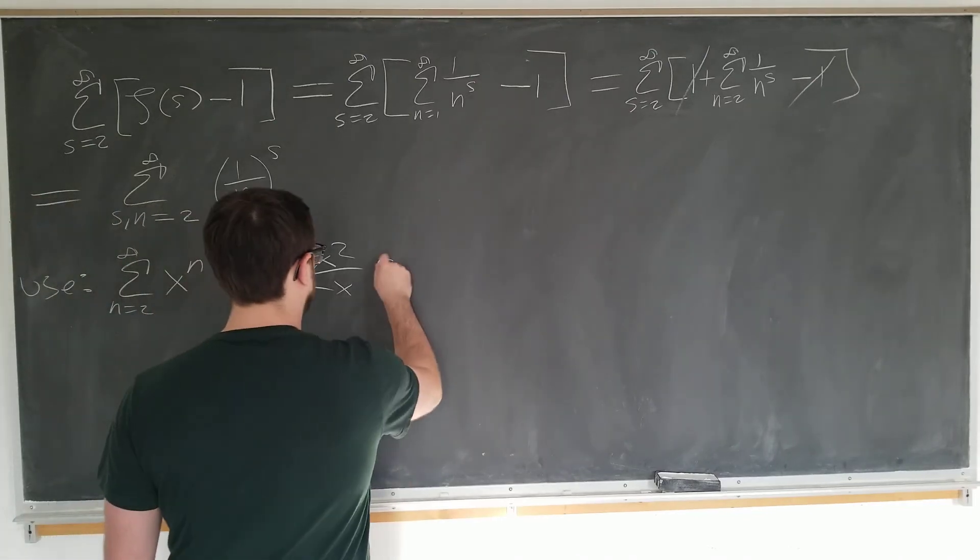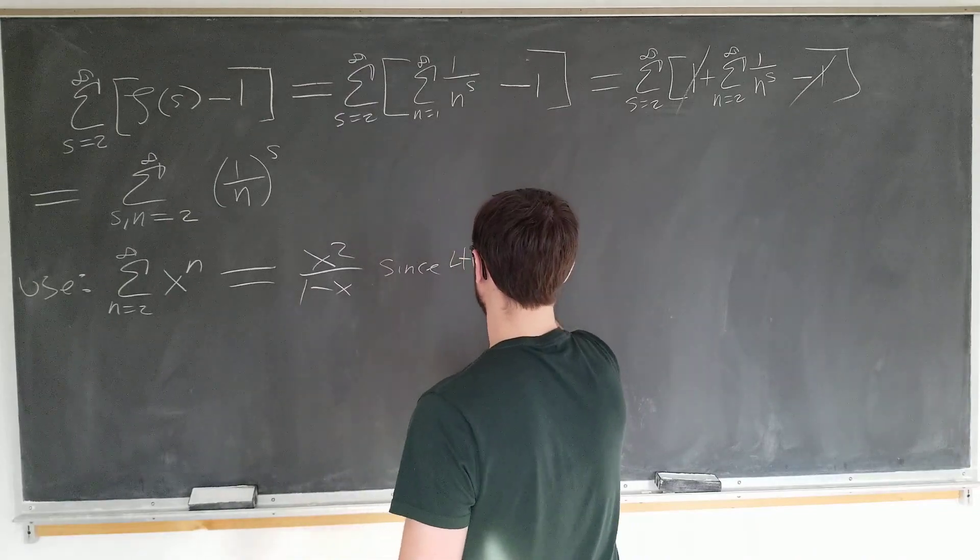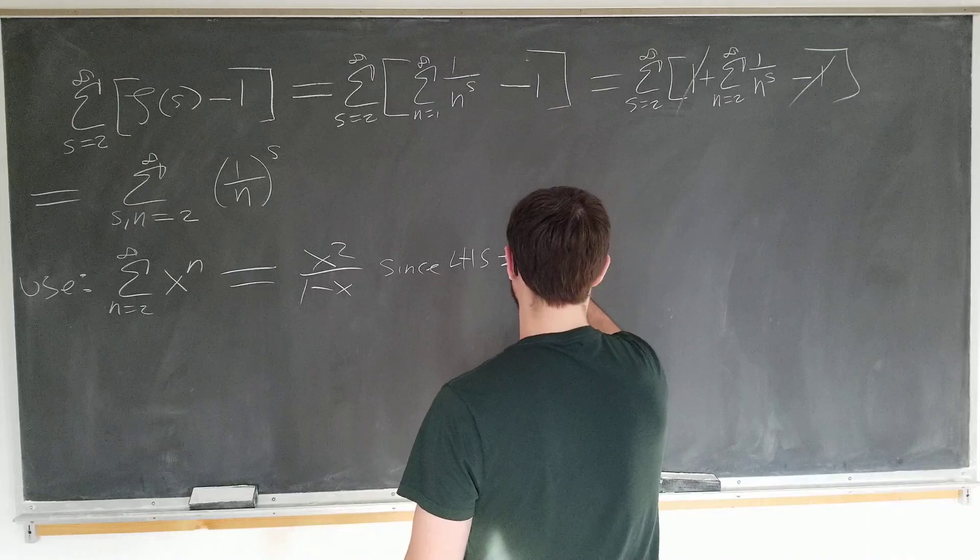We're going to use this result that if we start at 2 and go to infinity of the ordinary x to the n, it is just going to be x squared over 1 minus x. A simple proof of this is as follows: the left-hand side of this expression is just equal to 1 over 1 minus x, which is commonly known.